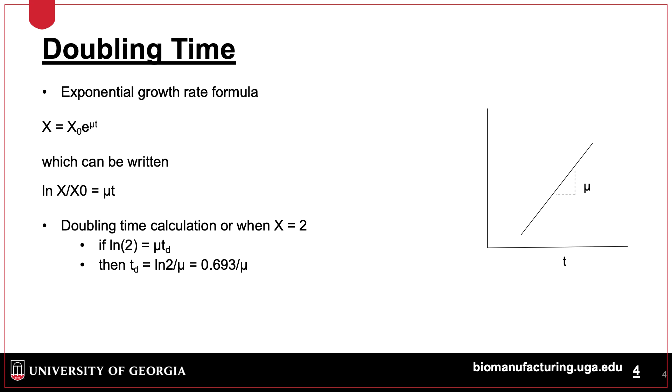The doubling time, which is a measure of how fast cells are growing, can be calculated by dividing the natural log of 2 by the growth rate, mu.